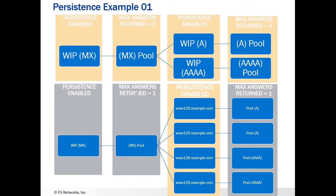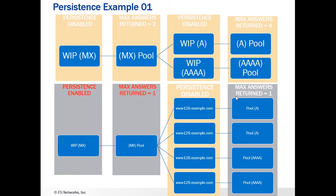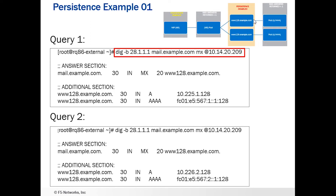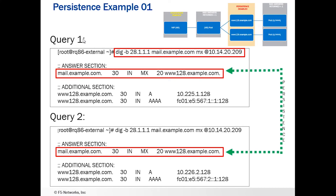Let's look at our example a bit further and make some changes. The original example had persistence disabled everywhere with max answers returned equal to 2 and 4. Now, if we look at the updated configuration, we have persistence enabled at the MX wide IP level with max answers returned equal to 1, and max answers returned equal to 1 at the pool level as well. Running the same DIG query with that configuration, and with the diagram shown for reference, we can see we got one answer in both query 1 and query 2.